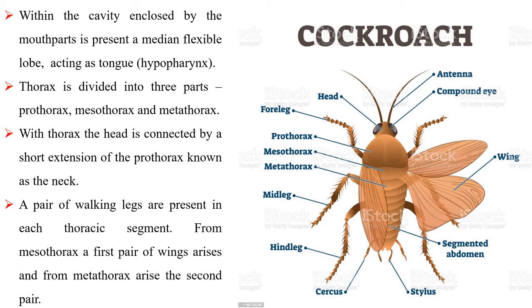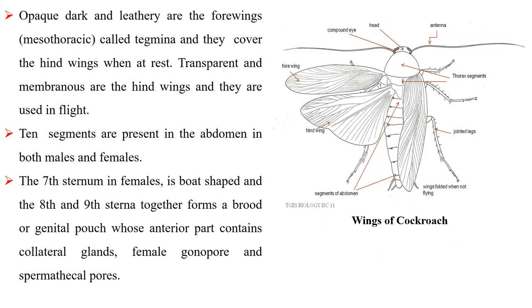Thorax is divided into three parts: prothorax, mesothorax and metathorax. The head is connected to the thorax by a short extension of the prothorax known as the neck. A pair of walking legs are present in each thoracic segment. From the mesothorax, the first pair of wings arise and from the metathorax arise the second pair. The four wings called tegmina are opaque, dark and leathery and they cover the hind wings when at rest. The hind wings are transparent and membranous and are used in flight.